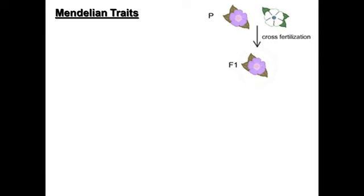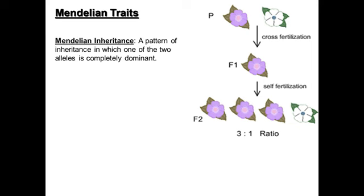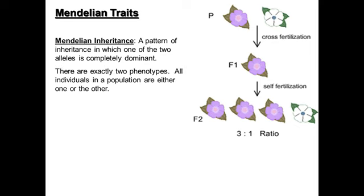What actually happens is, if you start with true-breeding plants, all of the offspring are purple. If you then cross-pollinate or self-fertilize those purple flowers, you get offspring in a predictable three-to-one ratio. That is Mendelian inheritance: one of two alleles is completely dominant, giving exactly two alleles and exactly two phenotypes. Everything in the population is one or the other — nothing in between.